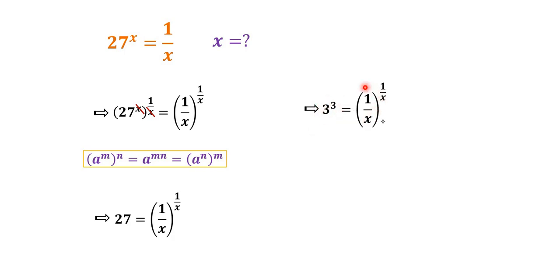So here in this equation we have 3 to the power of 3 is equal to 1 over x to the power of 1 over x. So something to the power of something is equal to something to the power of something.